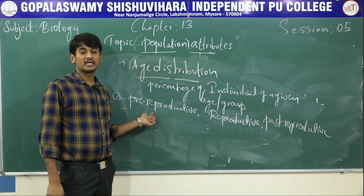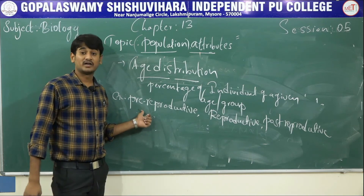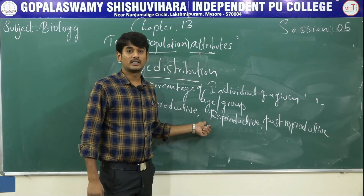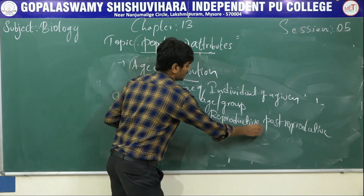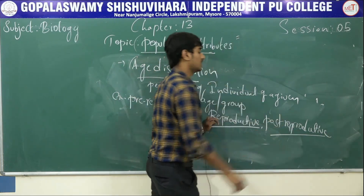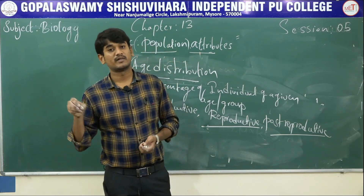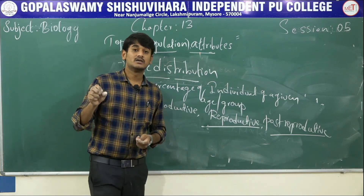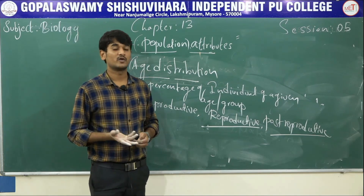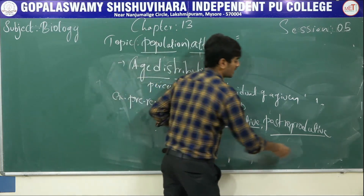In human beings, below 12 to 13 years is the pre-reproductive phase — they are not able to reproduce. From 14 to 45 or 50 years they are able to reproduce. After 50 to 60 years they are not able to reproduce — that is called the post-reproductive phase. In a mango plant, after 4 to 5 years juvenile phase, it enters the reproductive phase. After the reproductive phase it shows senescence or aging — that is called the post-reproductive phase.